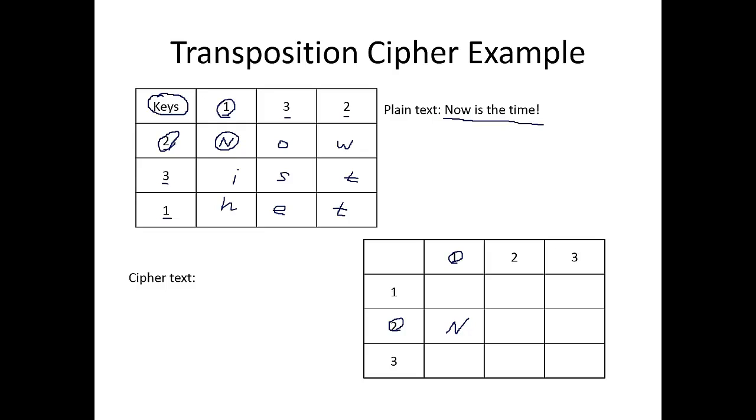And then, the next letter, O, right? It says, the key says, column three, row two for O. So column three, row two. So O actually goes here. What about W? In case of W, it says column two, row still two. Right? So column two, row two. So that's actually this one, column two, row two.